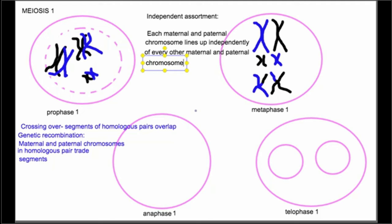One of the homework questions talks about how much genetic diversity can come from independent assortment alone. So if you ignore genetic recombination entirely, in a species like us with 23 pairs of chromosomes, how many unique sex cells could you get from independent assortment alone?